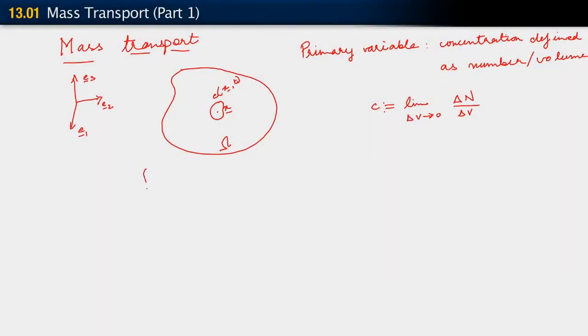Let's proceed as we've done before for our other balance laws and try to understand how this quantity varies. We are going to look at the total number of particles in our volume — in our body. That will be an integral over omega of C dV, and we want to look at how this number changes with time: d/dt of the integral of C dV.